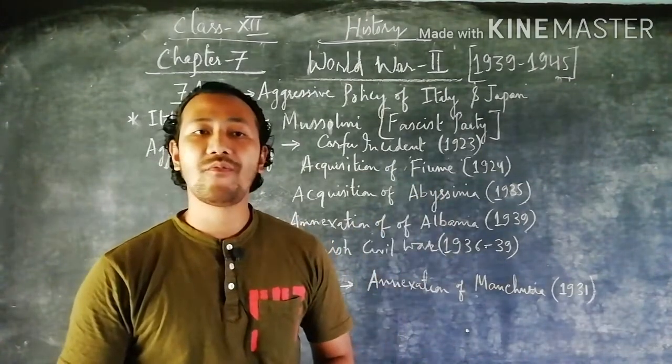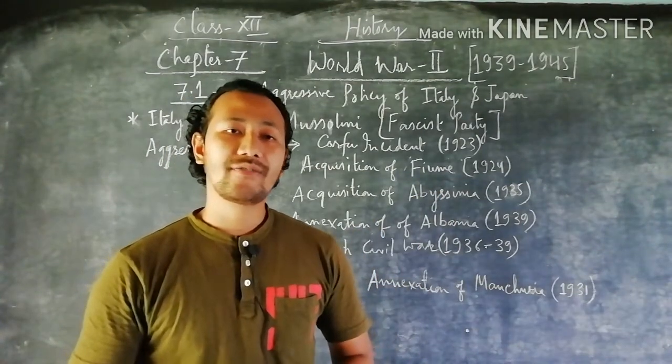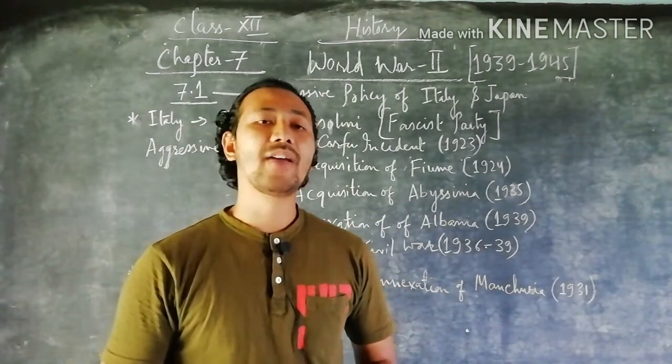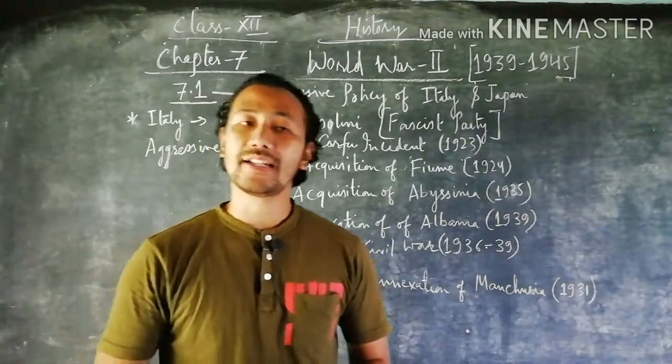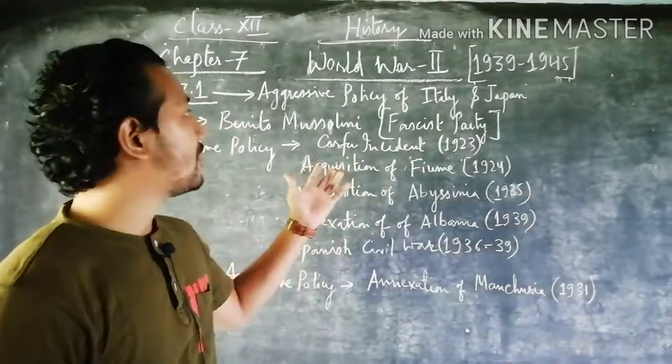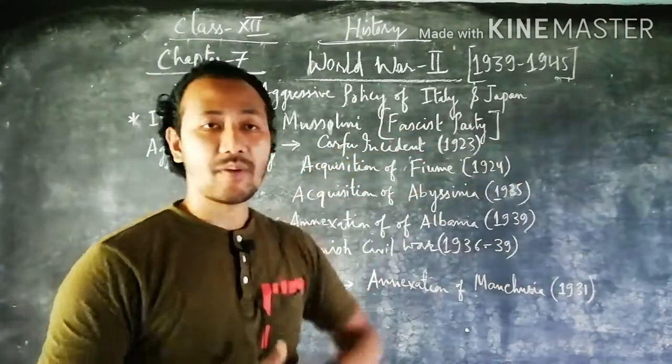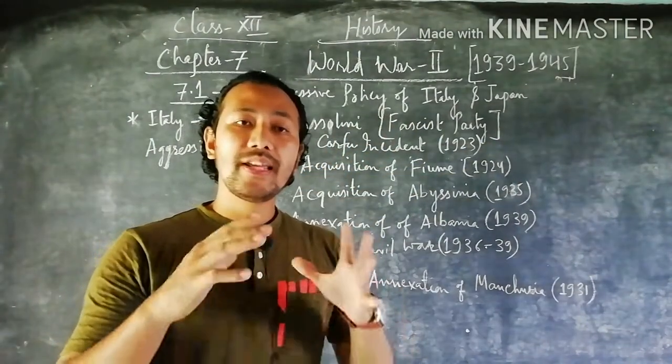But in today's class we will mainly focus on two more countries who also took the same kind of aggressive policies similar to Germany under Hitler. Those two countries are Italy and Japan.